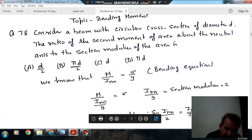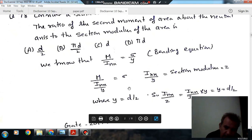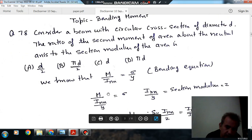Here, I_xx by y is called section modulus, and y is equal to d by 2 at the extreme fiber where the bending stress is maximum.